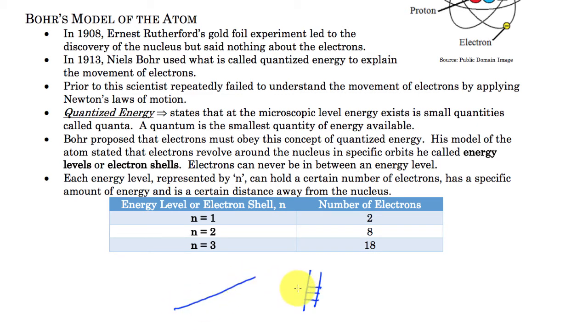So n is going to be a representation of these energy levels that Bohr was talking about. Now what he said or found was that there's a certain number of electrons that can fit into these particular energy levels. The first energy level can hold two electrons, while the second one can hold eight and the third one can hold eighteen. So let's take a little bit closer look at what I'm talking about here.